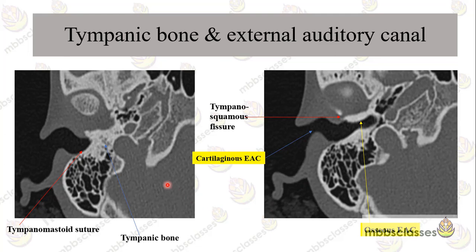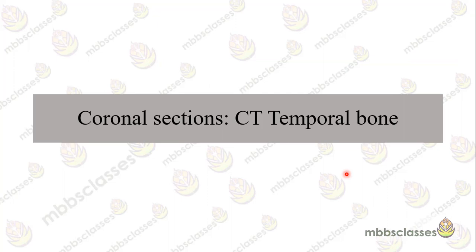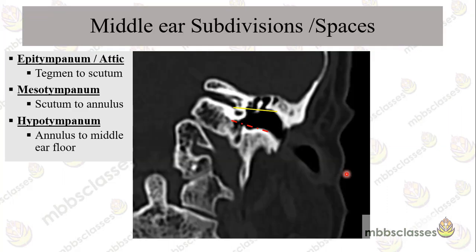Moving further down, we see the tympanic bone, which contributes to the formation of the external auditory canal. When reading this area, we pay attention to whether the lumen is normal, whether there are any bony swellings, or any extra mass present. This concludes the axial sections; now we have to read the coronal sections also.